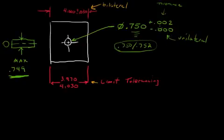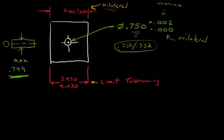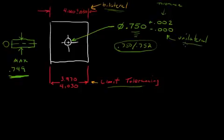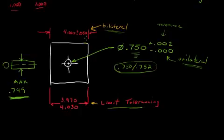This is called unilateral tolerancing — one way, one direction. All of the tolerance is to the plus side, in the positive direction. So the three methods of tolerancing we've covered here are bilateral, which is probably the most common, limit, and unilateral. And that's going to do it for our discussion today, introducing us to the concept of dimensioning and tolerancing.